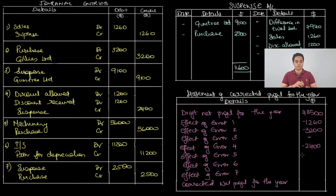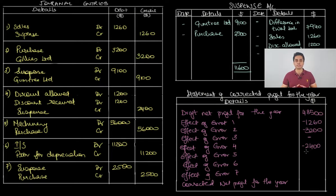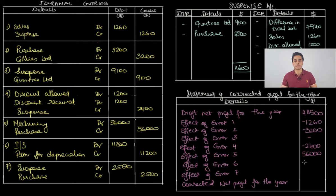Fifth entry: Machinery Dr has no link to the income statement, but Purchases Cr decreases purchases, reducing cost of sales, which increases profit — positive 56,000. Sixth entry: Depreciation expense is charged, reducing profit — negative 11,200. Seventh entry: Purchases is credited again, decreasing purchases and cost, which increases profit — positive 2500.